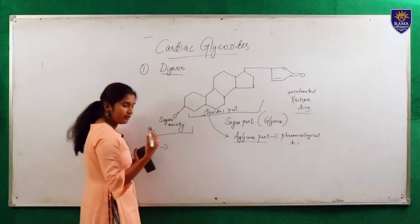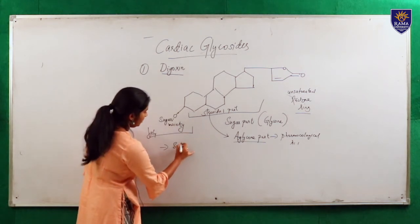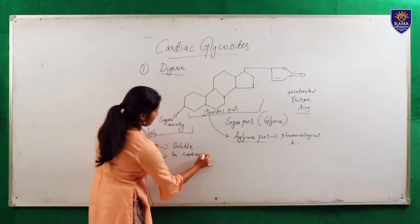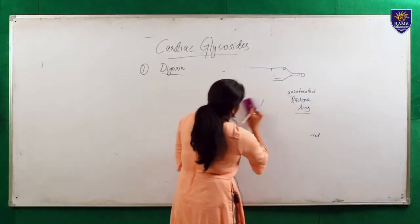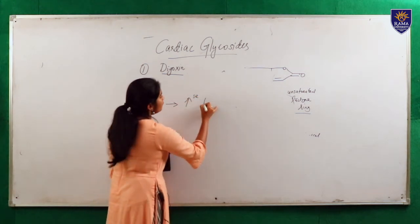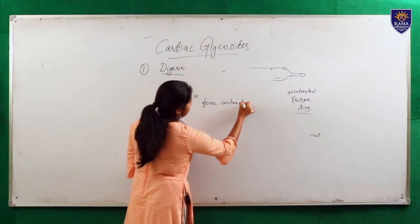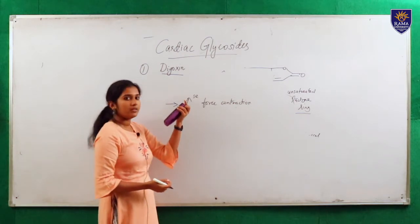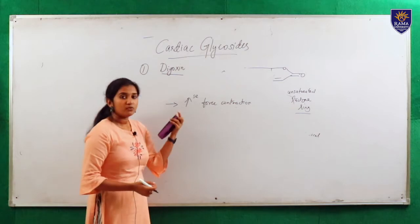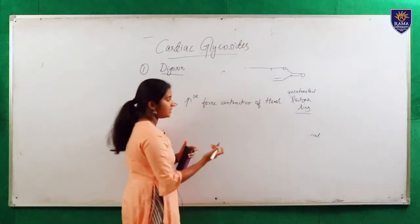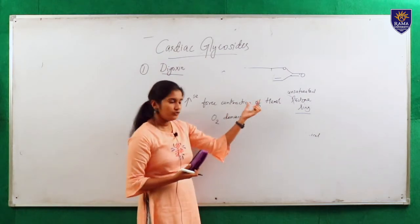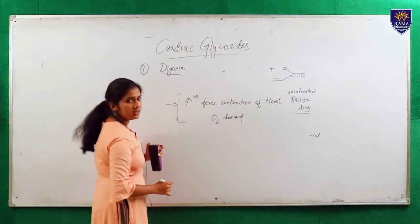The sugar moiety makes the drug more soluble and also improves the fixation of the drug in the cardiac myocytes. The main mechanism of digoxin is that it will increase the force of contraction of the heart. In congestive heart failure, the heart is unable to pump blood according to the needs of the body. Digoxin increases the force of contraction without increasing the oxygen demand.